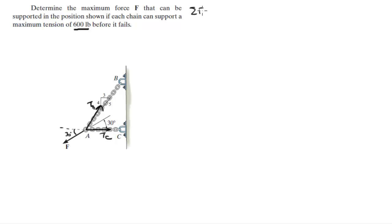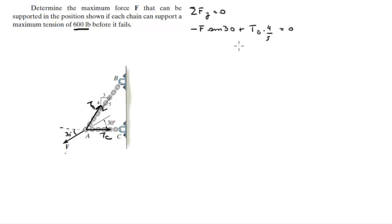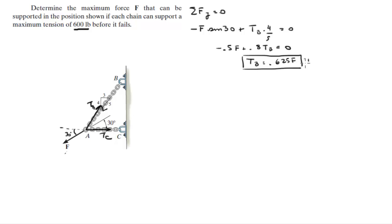In statics, the sum of forces in the y-direction is always equal to zero. So negative F sine of 30 — which is the y-component of this force — plus Tb times 4 over 5 equals zero. This gives us negative 0.5F plus 0.8 Tb equals zero, so Tb equals 0.625F. That's our first equation.